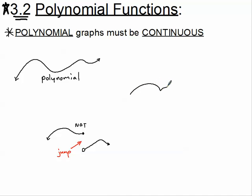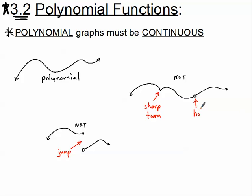Another example that's not a polynomial: this graph has two different problems. First, a polynomial will not have a sharp turn — you can almost cut yourself on that part of the graph. Second, it has to be continuous, so you cannot have any breaks like a hole. Polynomial functions are nice, smooth curves that go from negative infinity all the way to positive infinity.